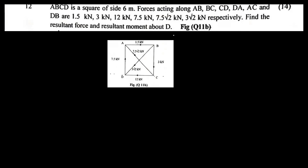We can make the resultant force and moment. If you want to modify the figure, you can modify it. For the diagonal forces along AC and DB, the diagonal angle is 45 degrees. For these forces, we can resolve them into components.